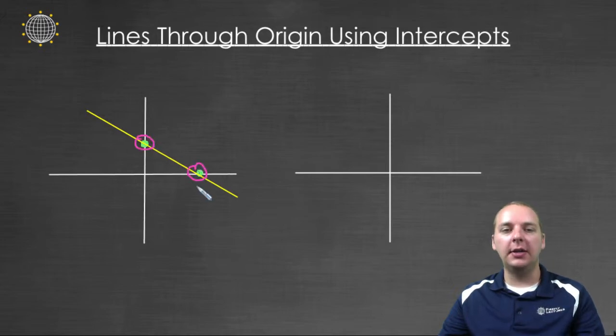And the x- and the y-intercepts are those unique points. But if your graph goes through the origin, and it's a linear equation, then it's a little bit different ball game.